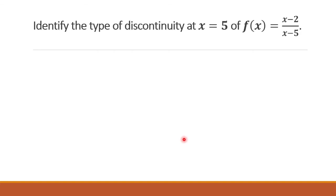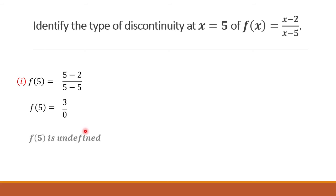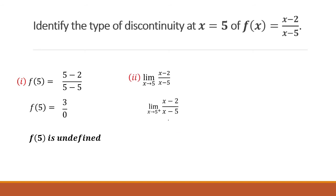For another example, let's say we have (x minus 2) over (x minus 5), and we would like to get the discontinuity at x equals 5. Getting f of 5, we have 3 over 0, so f is undefined. Since we have a finite number over 0, we use the strategy for infinite limits. For the right-hand limit, we evaluate at 5.001: (5.001 minus 2) over (5.001 minus 5), giving positive over positive, so this is positive infinity.